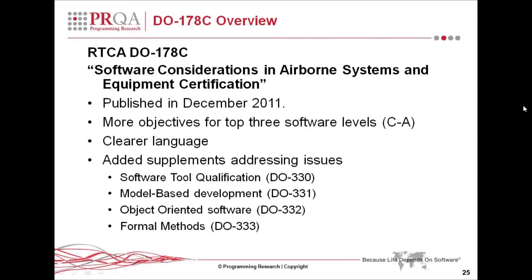DO-178C was published in December 2011 and was available to view in early 2012. It has the same title: Software Considerations — Airborne Systems and Equipment Certification. In DO-178C, more objectives for the top three software levels have been given and the language is clearer. One criticism of DO-178B was that it was so flexible it was difficult to interpret. DO-178C addresses this by publishing additional supplements covering software tool qualification, model-based development, and object-oriented software — methods that weren't widely used in 1992 but are common by 2011.